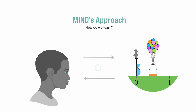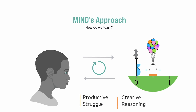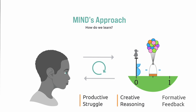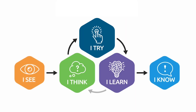And they become engaged in a more productive type of struggle, using creative reasoning while thinking about what's happening. And then once they test their creative ideas in this visual space, they get immediate formative feedback, helping them come up with an informed solution to their problem.